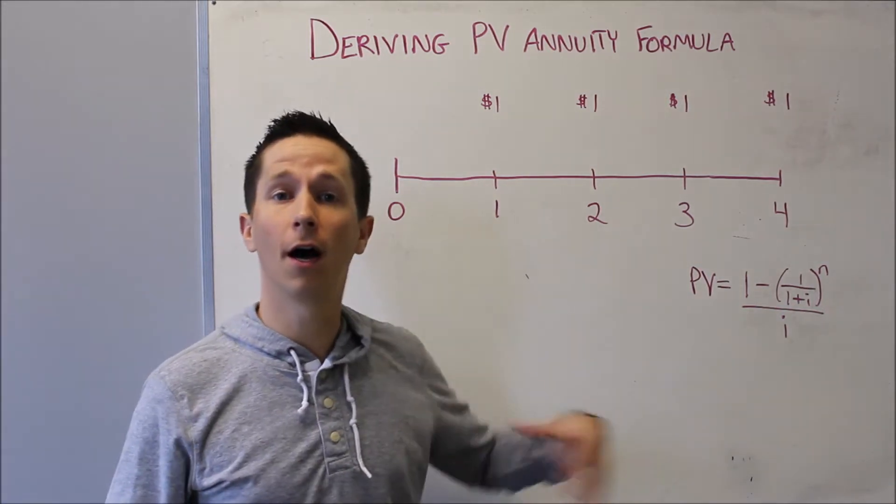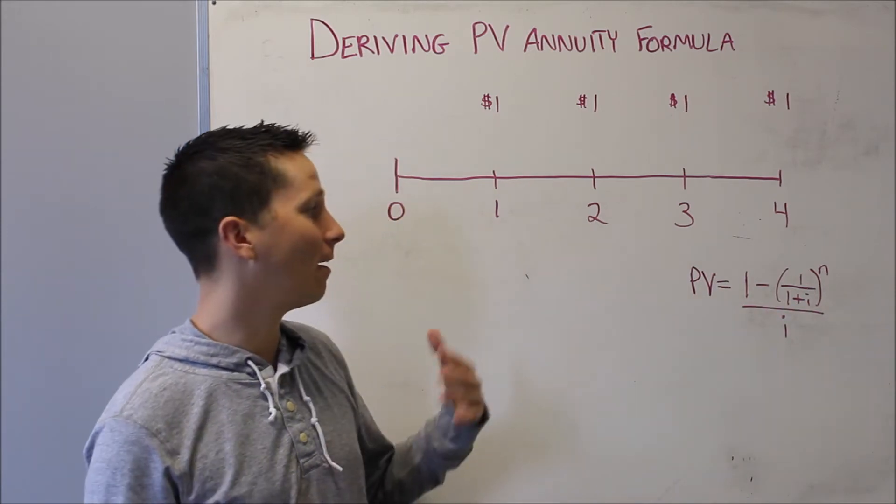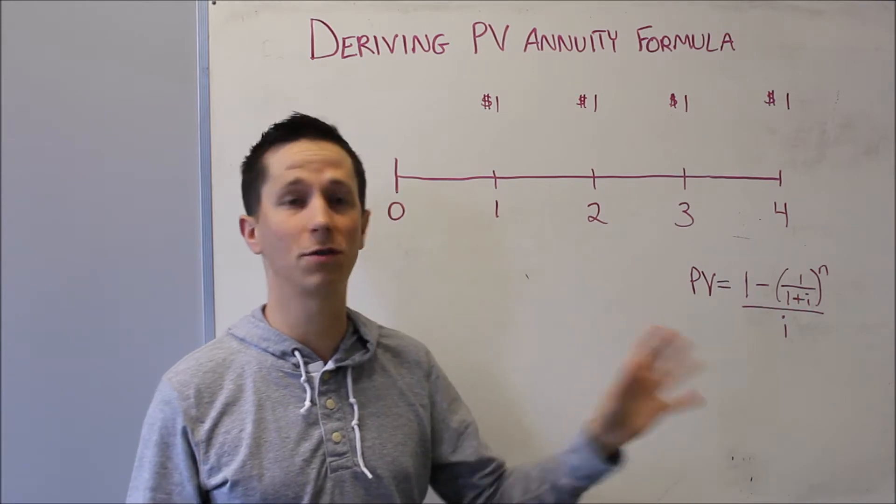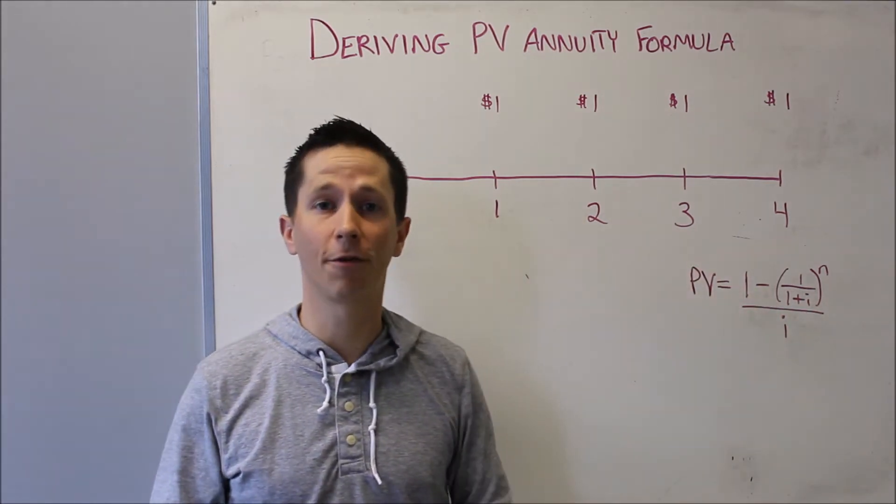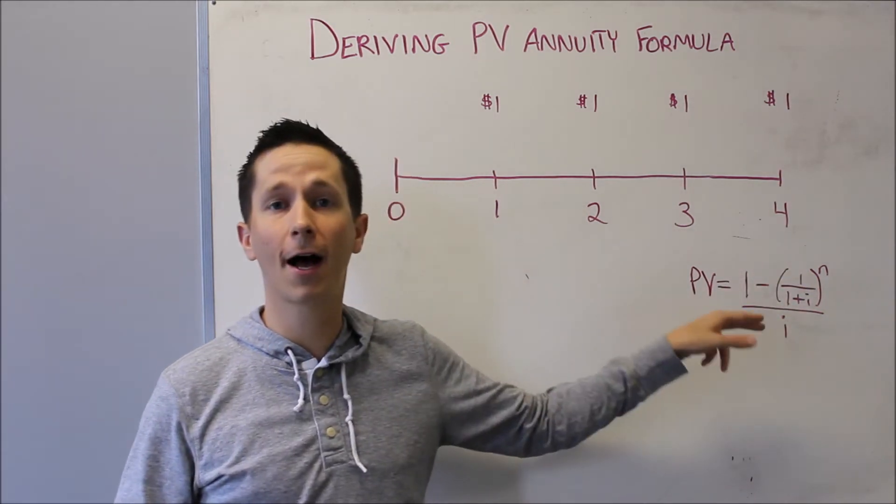So I've written the present value of an annuity formula. I'm using i for the interest rate per period, so it doesn't really matter if these are years or months. We're just using this as the effective rate per period. I'm using n as the number of periods. So this is our general formula, 1 minus 1 over 1 plus i to the n over i.